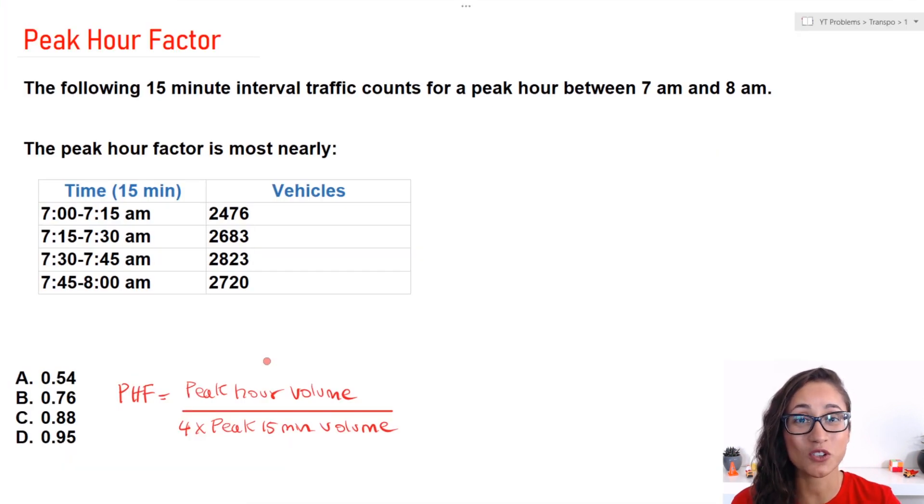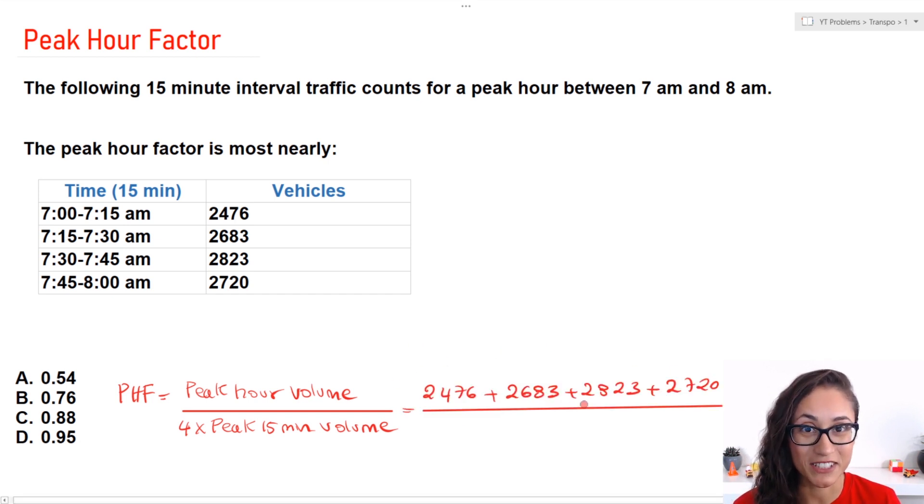So this is the equation here. Now, since we were given the vehicles just for an hour between 7 and 8, to get the peak hour volume, all we got to do is just take the sum of all these vehicles and that would actually give us the volume of vehicles that were between 7 and 8 a.m. And so that's what I did here.